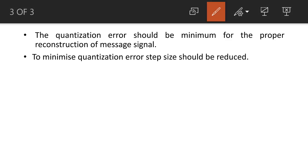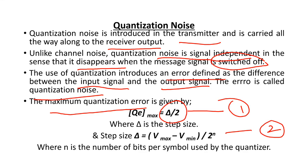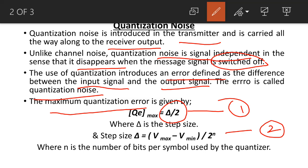The quantization error should be minimum for the proper reconstruction of message signal. To minimize quantization error, step size should be reduced. Now from equation 2, it is clear that the step size can be reduced either by decreasing dynamic range or by increasing number of bits per sample.